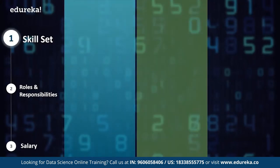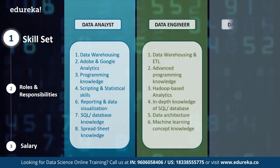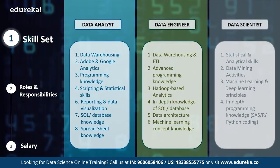Now let's compare these different roles on the basis of their skills, roles and responsibilities, and salary. Starting with skill sets: a data analyst's primary skill set revolves around data acquisition, handling, and processing. An ideal skill set for this profile includes data warehousing, Adobe and Google Analytics, programming knowledge, scripting and statistical skills, reporting and data visualization using various tools, database knowledge like SQL, and spreadsheet knowledge. A beginner's level programming experience also aids in building better statistical models. A data engineer, on the other hand, requires an intermediate level of programming to build thorough algorithms along with mastery of statistics and math.